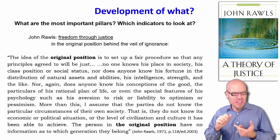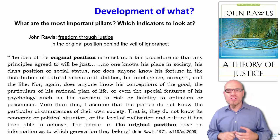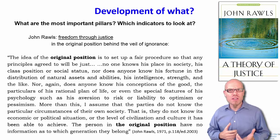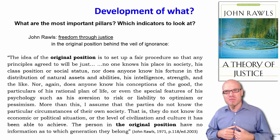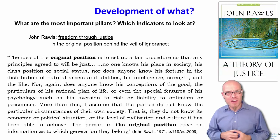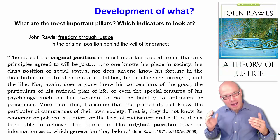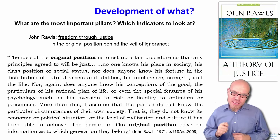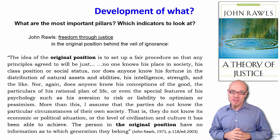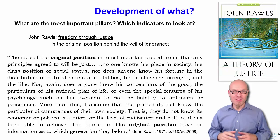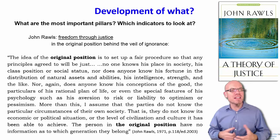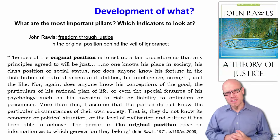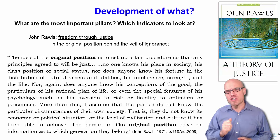In the original position, we do not actually know what place in society we will take after we finish the designing process. We don't know if we're going to be extremely smart or just average, strong or weak, a man or a woman, old or young. We don't even know our psychology — whether we'll be risk-averse or have a very positive outlook on life. We are behind what he calls the veil of ignorance. Once we finish designing society, the veil of ignorance is removed, and we are randomly placed at one random place in our society — rich or poor.